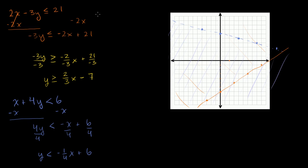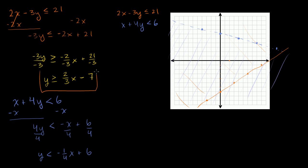Now if I were to ask what x's and y's satisfy both inequalities — 2x minus 3y ≤ 21, and x plus 4y < 6 — you'd say it's just the overlap of their solution sets: the area in the xy plane satisfying both. That's the part above the orange line and below the blue line. The overlapping region, which I'll shade in yellow, is right in between the two lines.